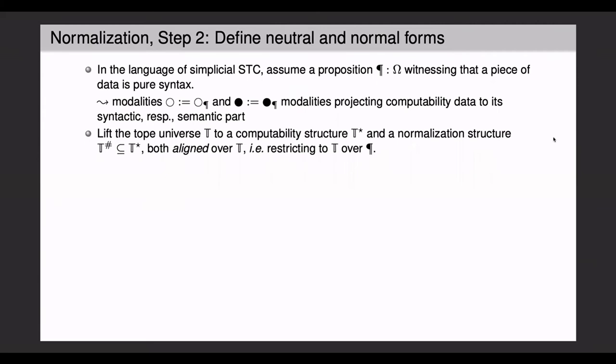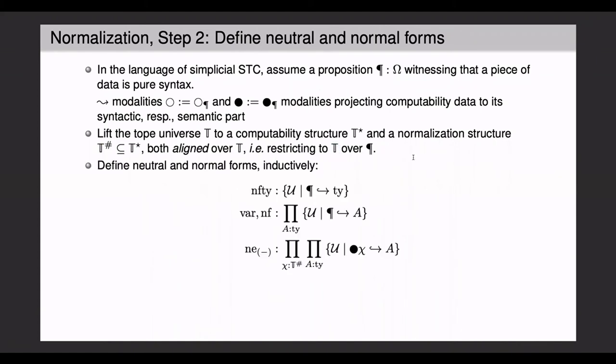Projecting down to the purely syntactic or the purely semantic part. The next step is to lift the tope universe to first the computability structure, and from then a normalization structure, both of which are aligned over T, i.e. over the syntactic part they restrict exactly to T. Now, as is common for NBE, we define the neutral and normal forms inductively. So the neutral forms are sort of the format for our terms to begin the NBE algorithm with. But now what's new here is that the neutrals are parameterized by what's called the frontier of instability.